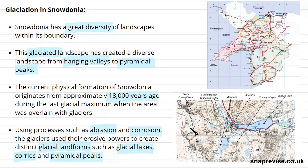This is a map of one of the areas of Snowdonia, and it nicely points out all the different features that can be seen on this OS map, such as moraines, rock steps, truncated spurs, this massive ribbon lake here, the shape of glacial U-shaped valleys, and some corries or cirques over here.